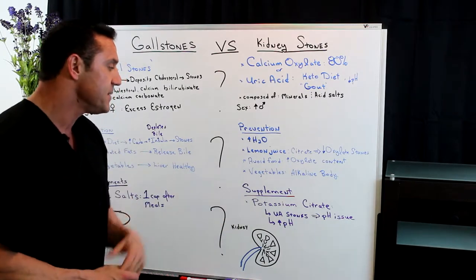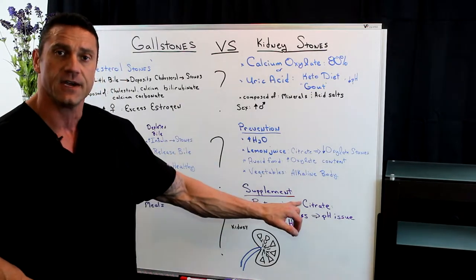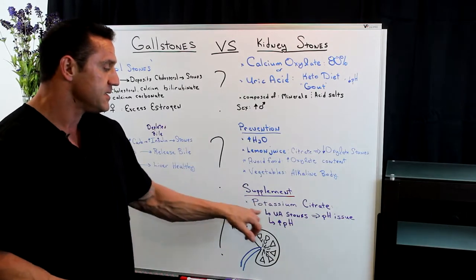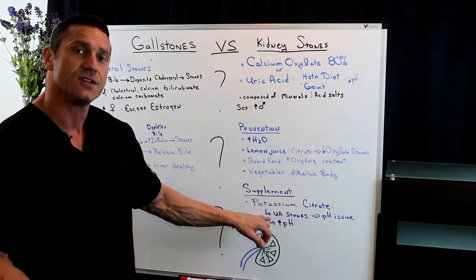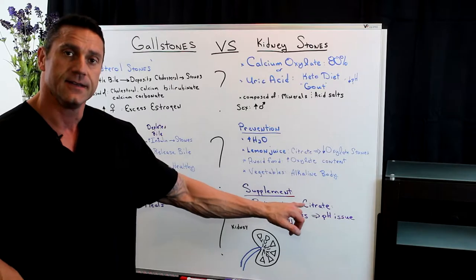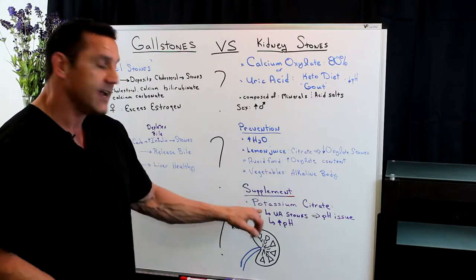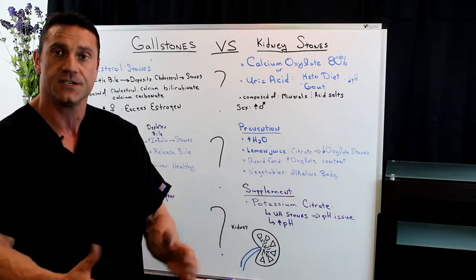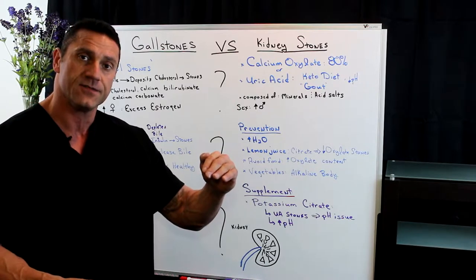For supplements, I always recommend potassium citrate. Especially with uric acid stones, which are a pH issue, taking potassium citrate will actually raise your pH and lower your chances of the stones being formed.